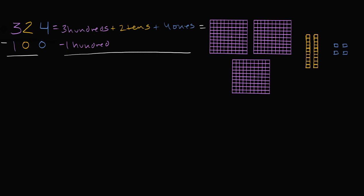What's that going to be? Well, I had three hundreds, I take one of them away, now I'm going to have two hundreds. I had two tens, I take away no tens, I still have two tens. I had four ones, I take away zero ones, I'm still going to have four ones. I had three hundreds, I take away a hundred, I'm going to have two hundreds. I'm not taking away any tens, so I still have two tens, and not taking away any ones, so I still have four ones.